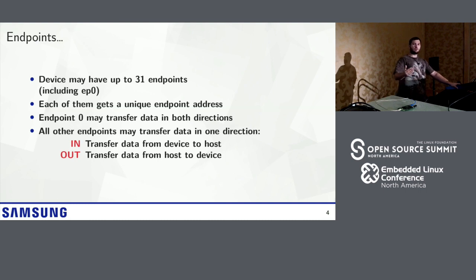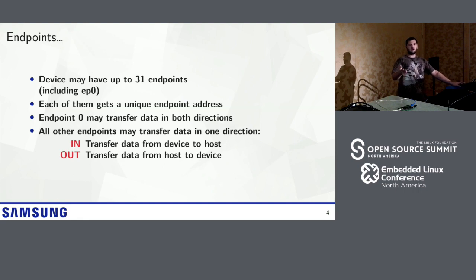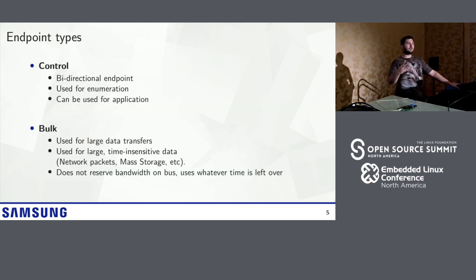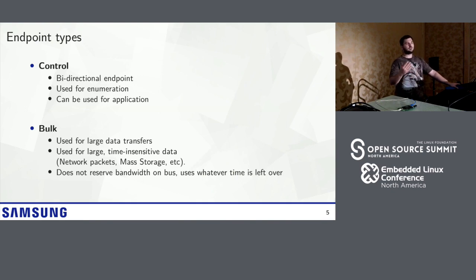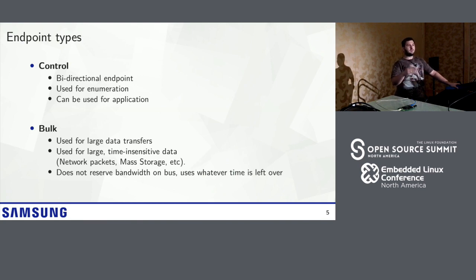In the Internet world, you usually choose between TCP and UDP depending on your use case. In USB, you have four types of endpoints to choose from. The first is control, reserved for endpoint 0, used during enumeration — the process of discovering a new USB device. It can also be used by the application later, but due to bandwidth constraints, it's better to use other endpoint types for real transfers.